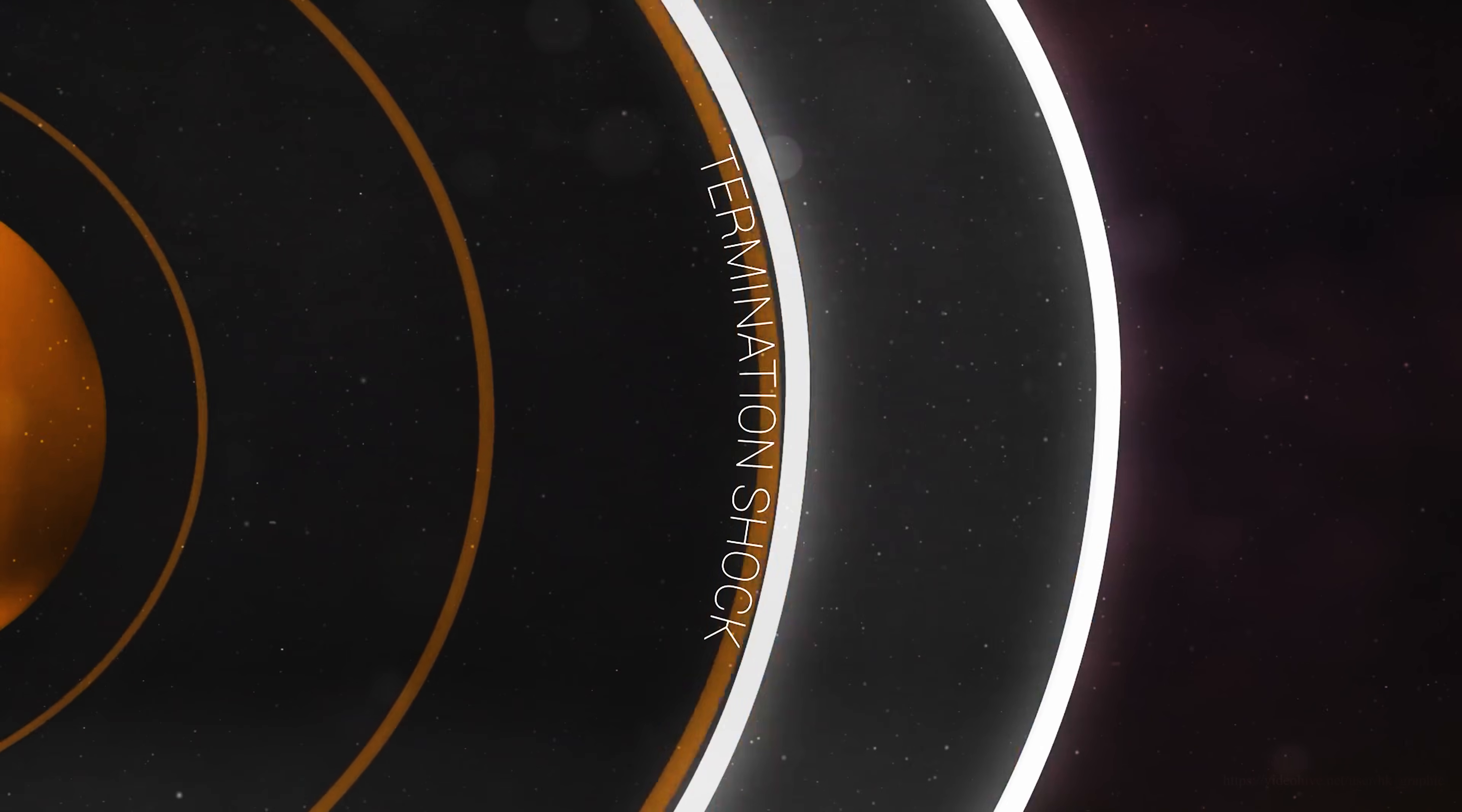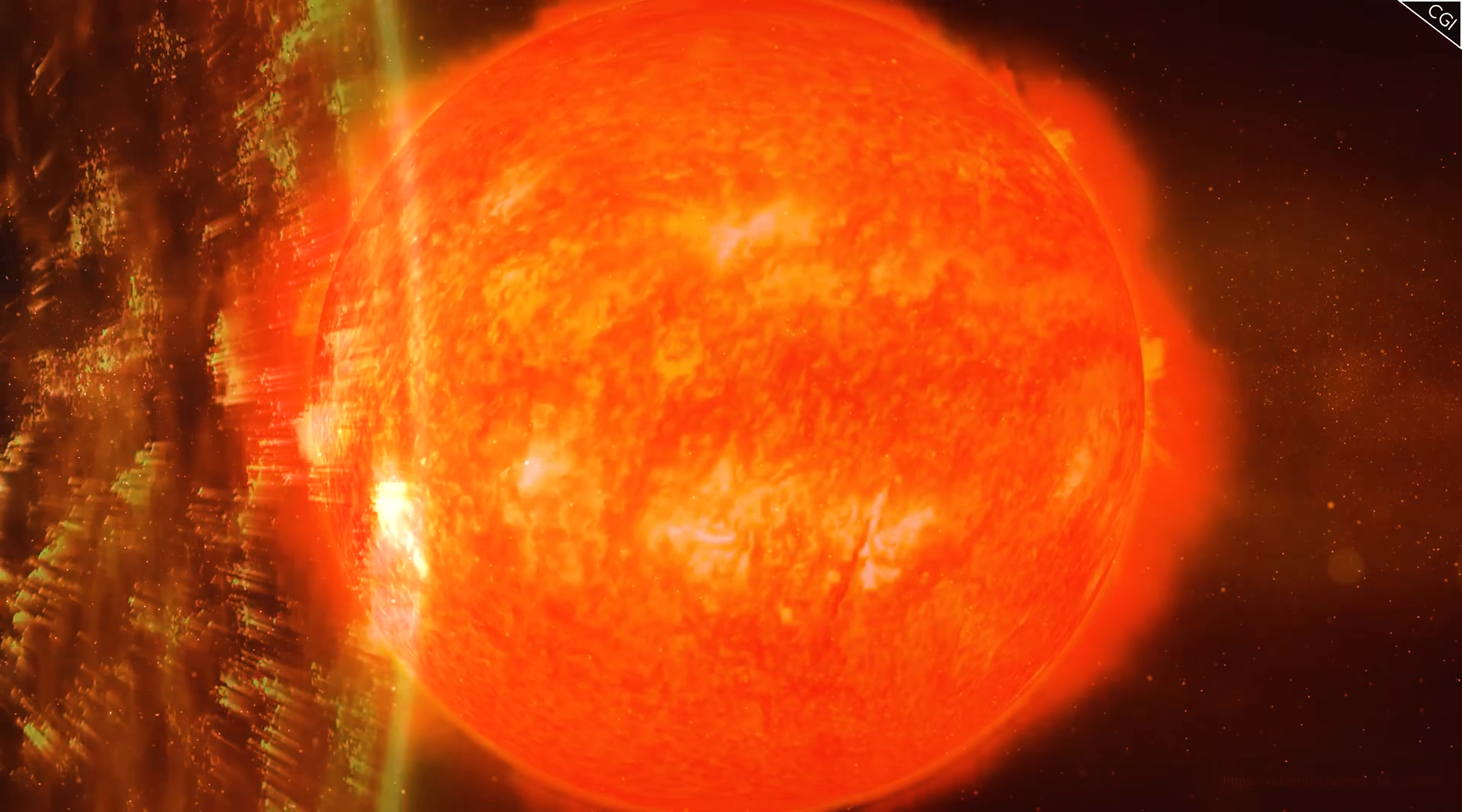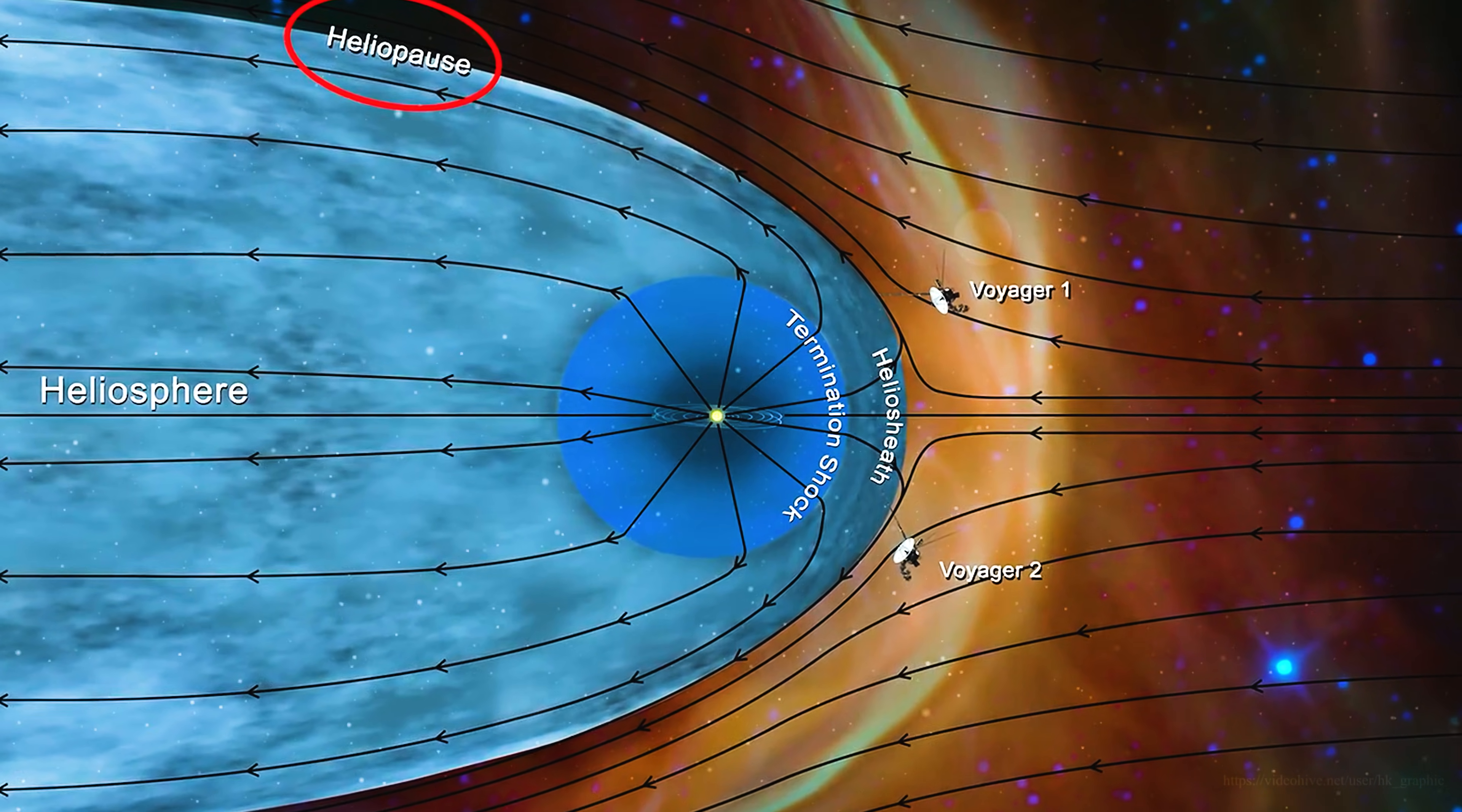The probes also detect shock waves from violent solar activity, events that left the sun years earlier, waves that now ripple through the outer frontier where the solar wind no longer dominates. Every one of these discoveries reveals how the heliosphere, our star's protective shield, expands, contracts and breathes. And yet, despite these breakthroughs, keeping Voyager alive has never been more difficult.